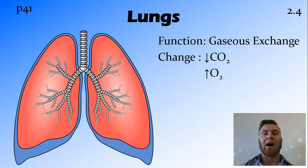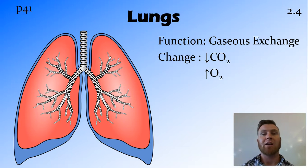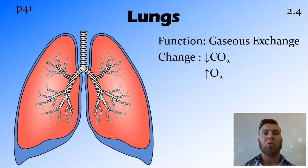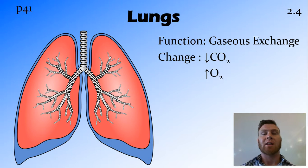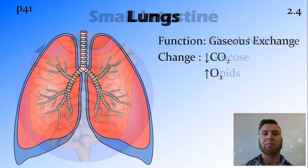The lungs are our organ for gaseous exchange. What happens is we breathe in oxygen, so the blood going past the lungs is going to increase in the amount of oxygen. And we breathe out carbon dioxide, so the carbon dioxide levels are going to decrease as the blood goes past the lungs.